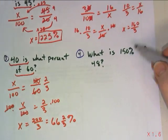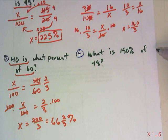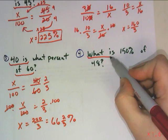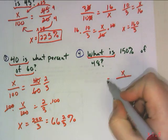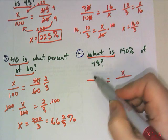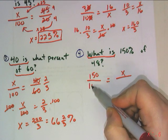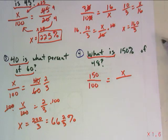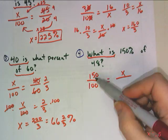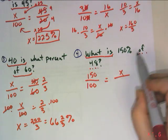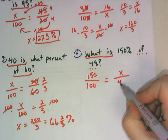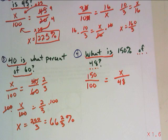Last but not least, number 4, what is 150% of 48? What is, and that's my indicator that the part is missing. 150%. So the percent, and it still goes over 100. Even though my percentage is bigger than 100 itself, percent always means out of 100. And of 48, they're not actually physically next to each other, but in the question they are. So 'of' is my whole.